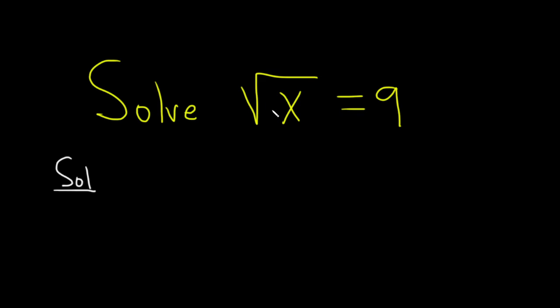So x is trapped inside this square root. So in order to get rid of the square root, what we have to do is basically square both sides.